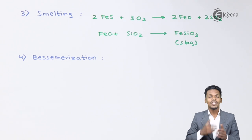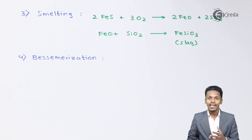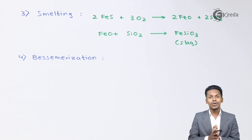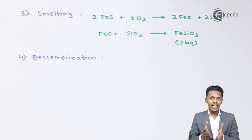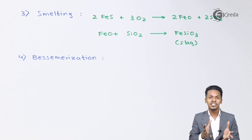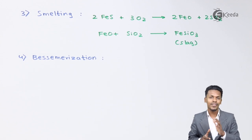This is how we remove the impurity FeS, and what remains is Cu2S. We now need to convert that Cu2S into copper. The remaining ore — cuprous sulphide (Cu2S) — is taken to the Bessemer converter, and this process is known as Bessemerization.